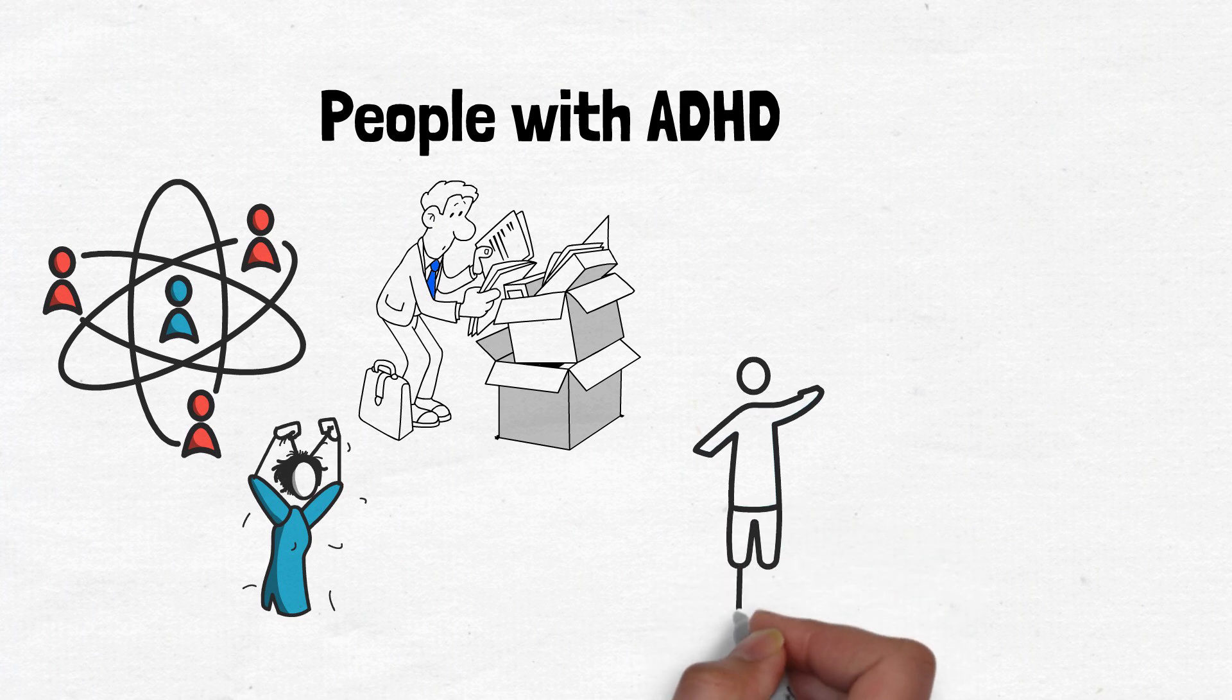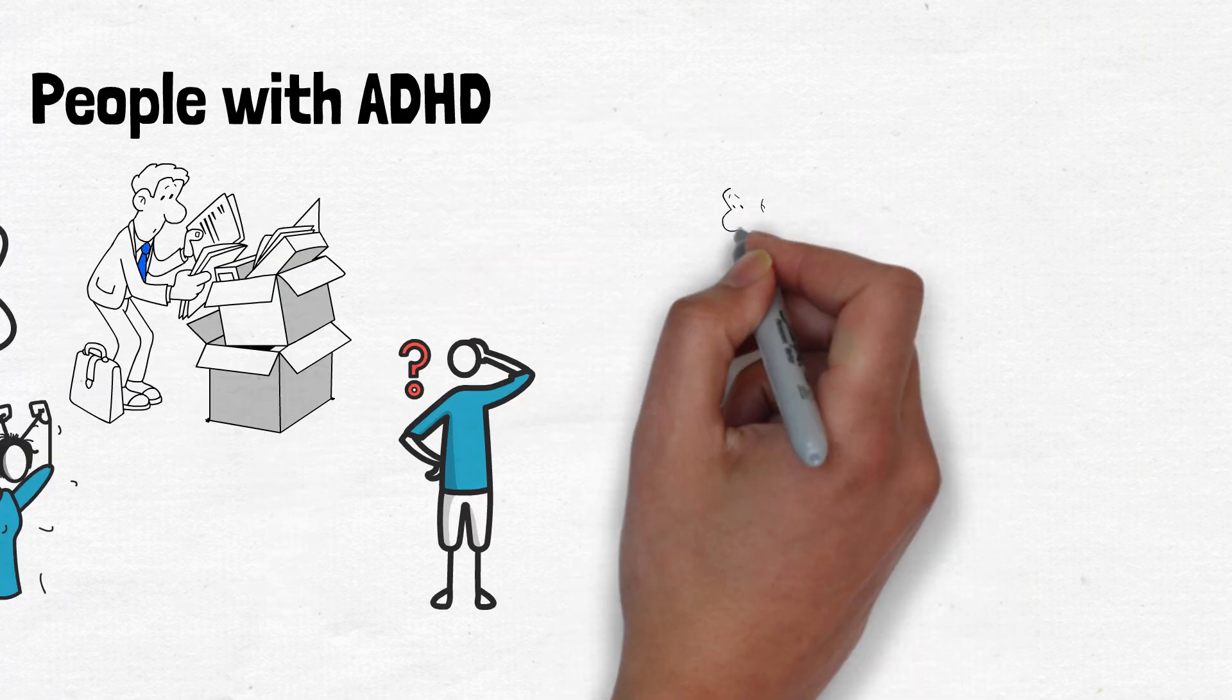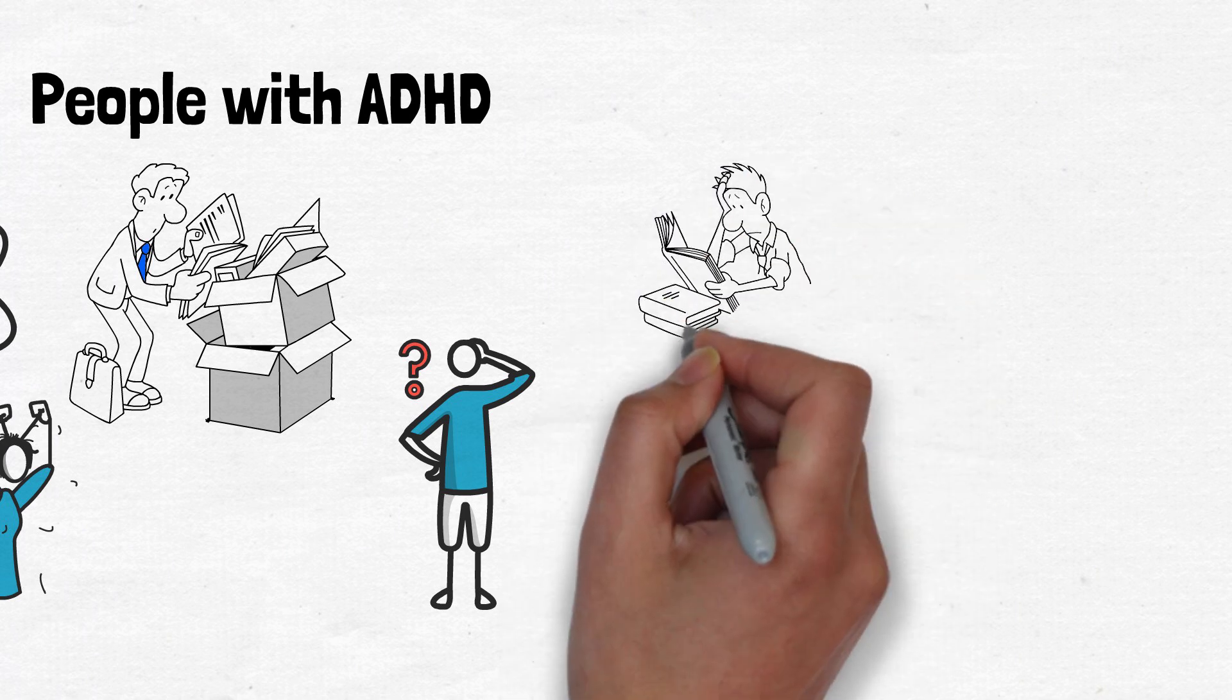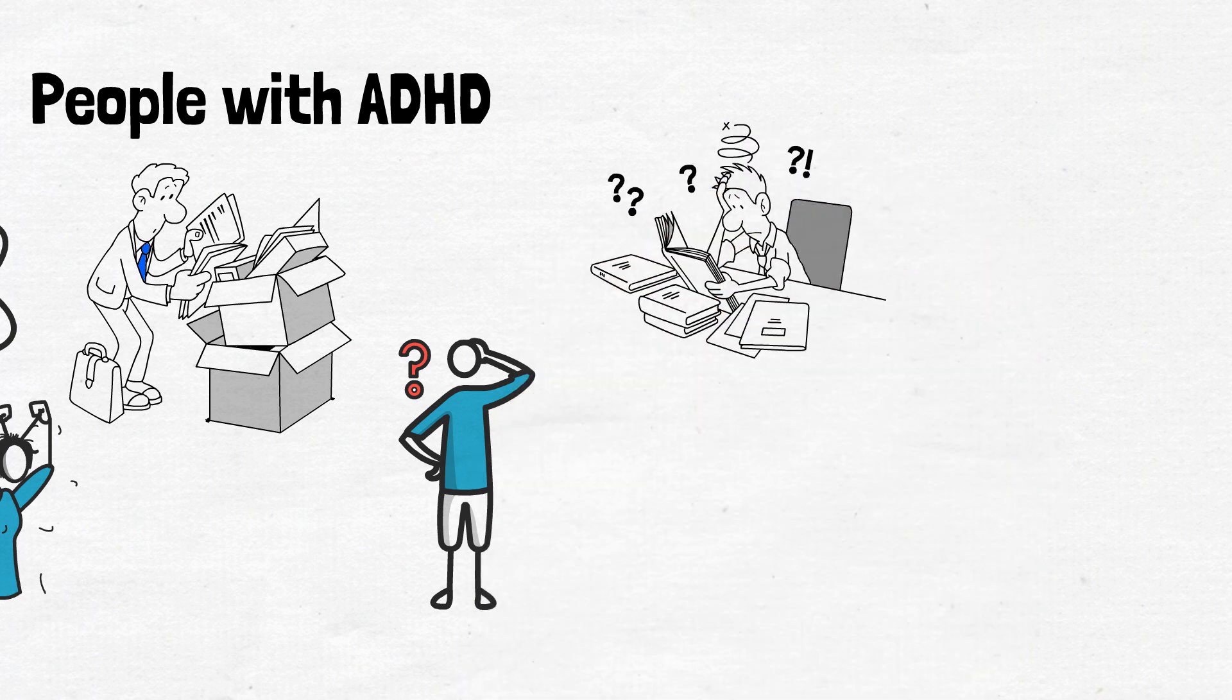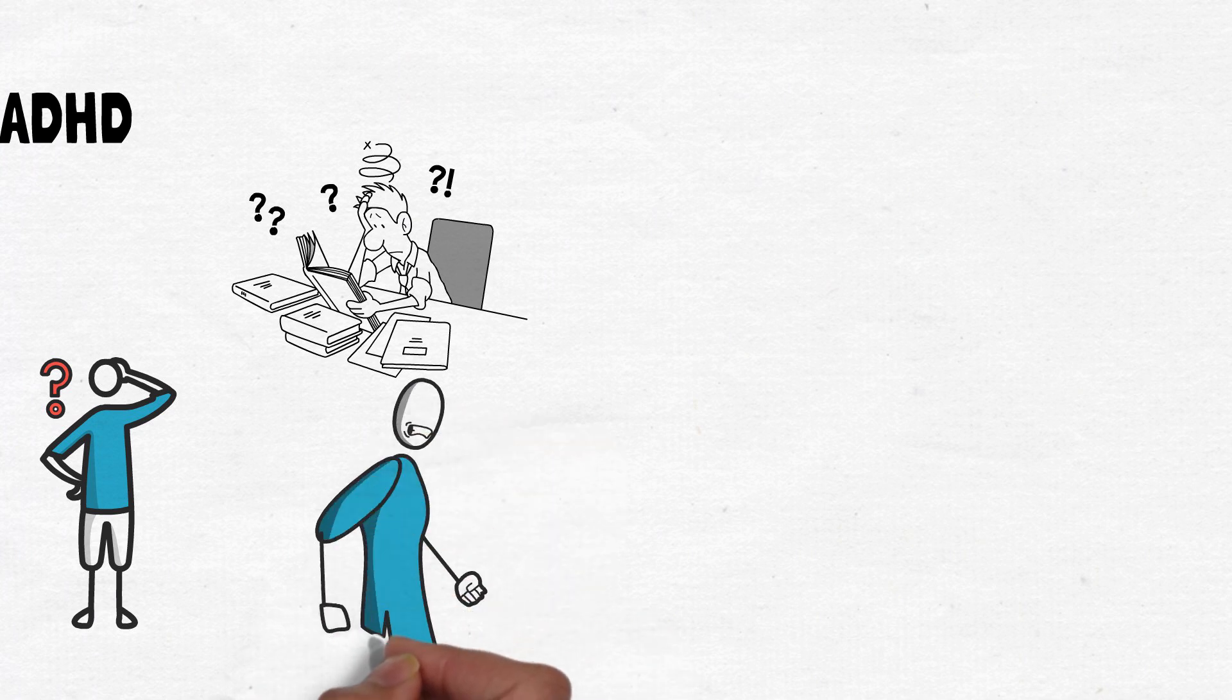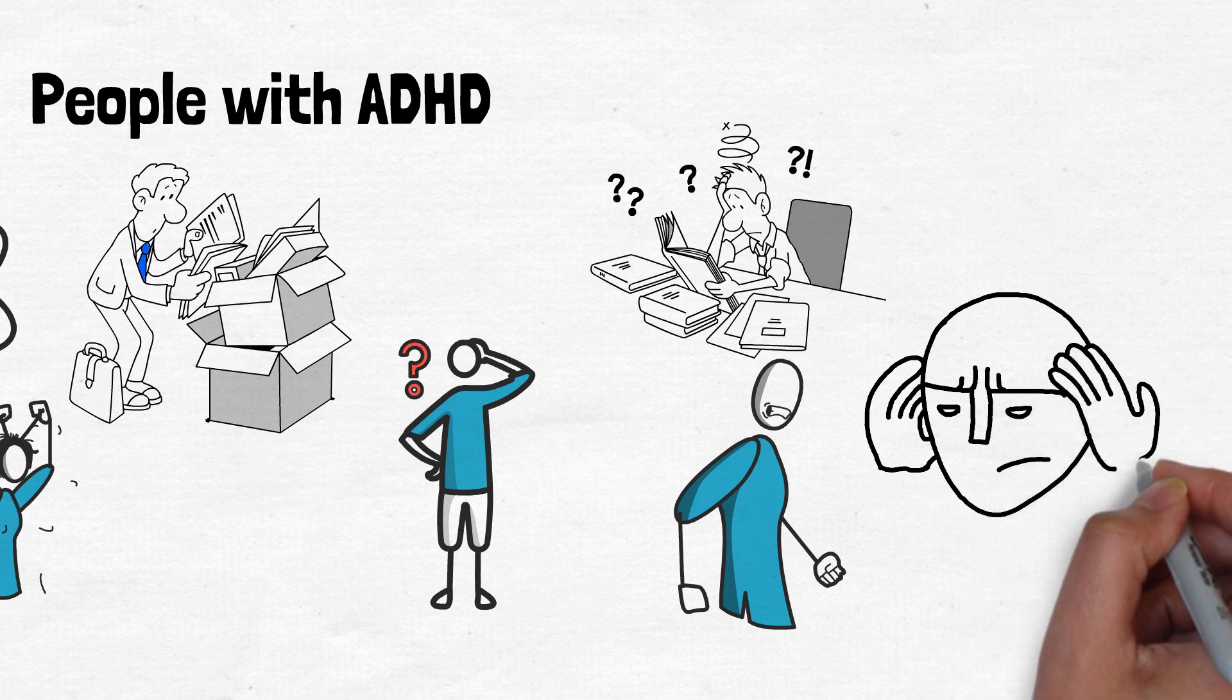People with ADHD, yes they are distractible, yes they are impulsive, yes they are easily annoyed by things happening in the room. They sometimes have a high level of emotionality as well, not always but often. However, people with ADHD can have a hyperfocus, an incredible ability to focus on things that they really enjoy or are intrigued by.